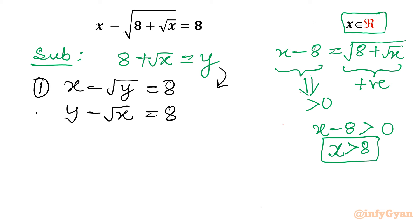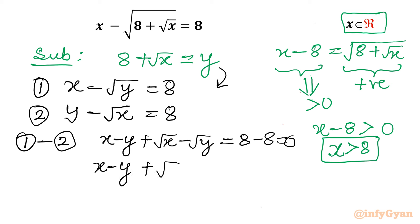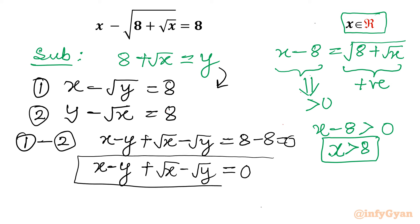So we have now a new set of equations: equation 1 is x minus root y equal to 8, and equation 2 is y minus root x equal to 8. Now I will take equation 2 away from equation 1. So we get x minus y, then minus the quantity root x minus root y, and the right-hand side is 8 minus 8 which is 0. So the left-hand side becomes x minus y plus root x minus root y, equal to 0.